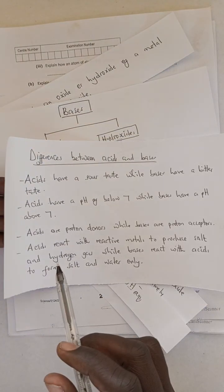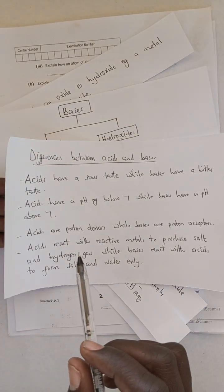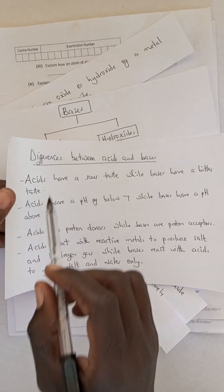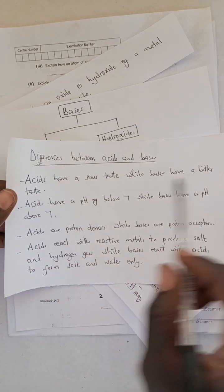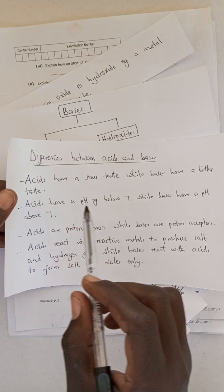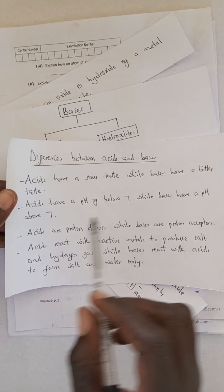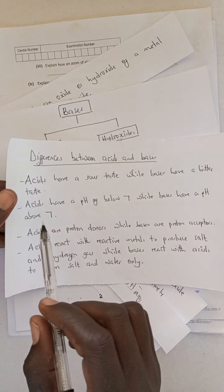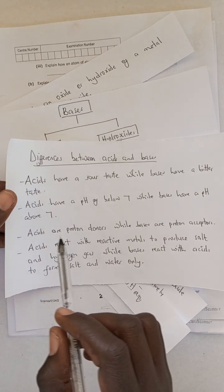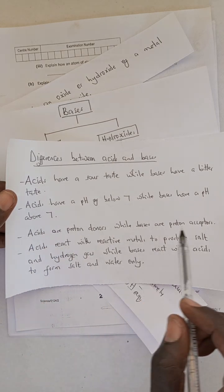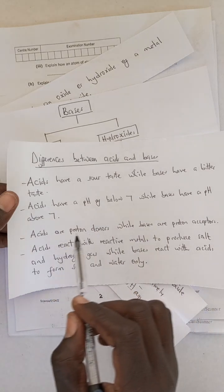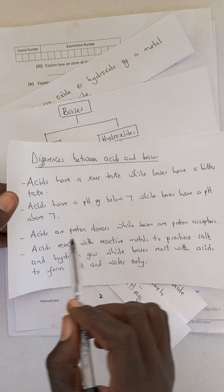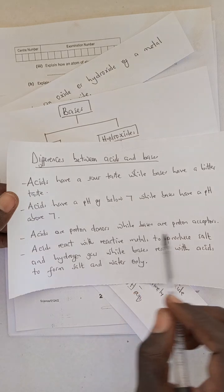So to make the differences, here are some of the differences between acids and bases. Acids have a sour taste while bases have a bitter taste. Acids have a pH below 7 while bases have a pH above 7, and acids are proton donors while bases are proton acceptors. So if you put this answer in the Zambian syllabus, the 5124 science or 570 chemistry, you wouldn't be marked wrong.